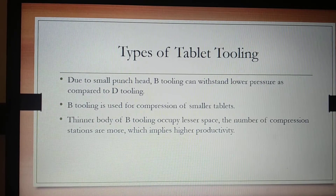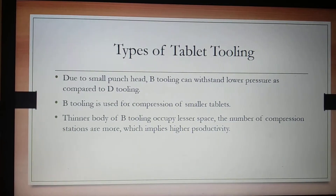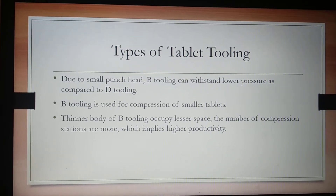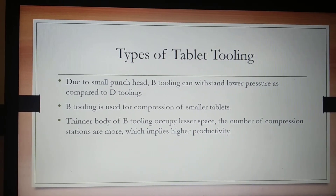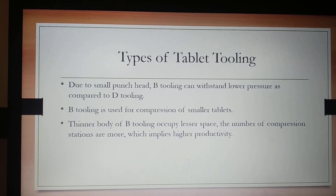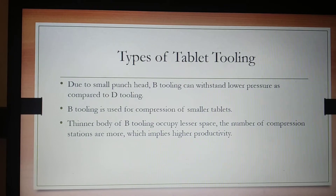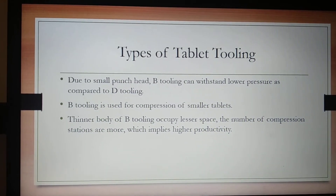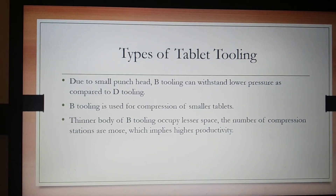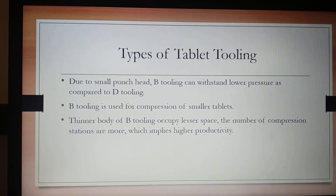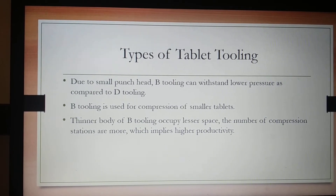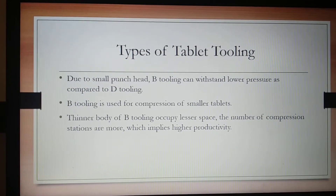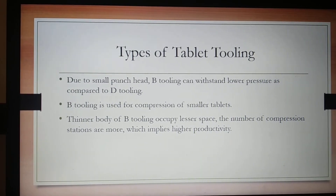The thinner body of B tooling occupies lesser space, and therefore the number of compression stations are more on a B tooling machine, which results in higher productivity. So if the tablet size is smaller and you want to increase productivity, switching from D tooling to B tooling or BB tooling will automatically increase productivity.